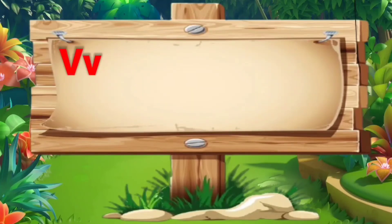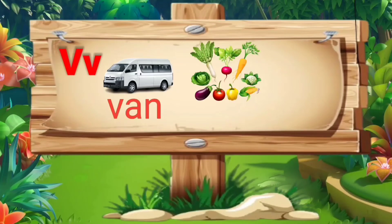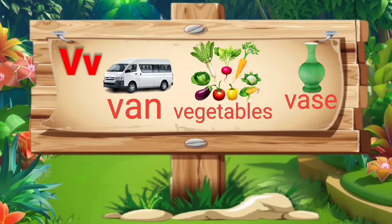V. V for van: V, A, N — van. V for vegetables: V, E, G, E, T, A, B, L, E, S — vegetables. V for vase: V, A, S, E — vase.